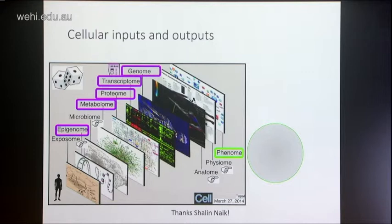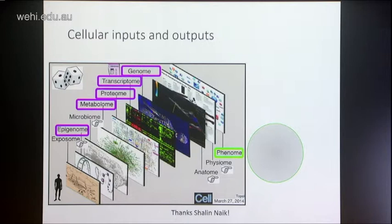I was procrastinating this morning when I was writing this talk, checking my Twitter feed. Someone tweeted a repost of a paper from Cell in 2014 which I thought was quite relevant, so I spent some time incorporating it into the talk. The idea of the paper was that we need to stop just thinking about the genome and think about all the other 'omes', and then we'll understand biology much better. Where I feel it comes into these concepts is that the 'phenome', to me, is cell state — the final differentiation state of a cell at any given time.